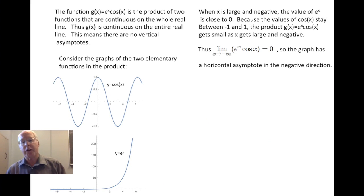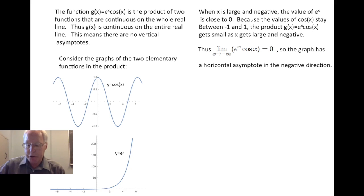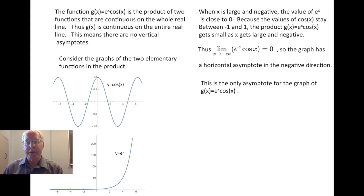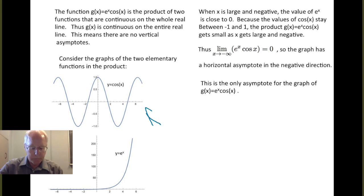Indeed, that's our conclusion: this limit is zero as x goes to minus infinity, so this graph has a horizontal asymptote in the negative direction. This is the only asymptote for the graph of g of x equals e to the x cosine x. The lesson to take away is that the graphs we saw didn't really help much — they were suggestive. Only by actually sitting down, thinking, and doing some mathematics about the two contributing functions — cosine and exponential — and what happens when you take their product, could we really arrive at the conclusions we wanted.